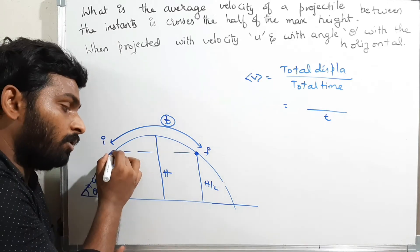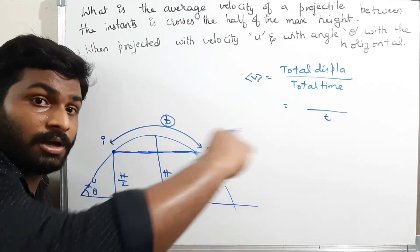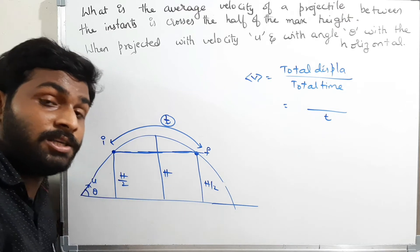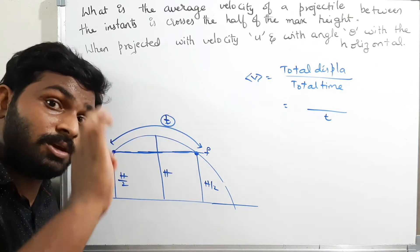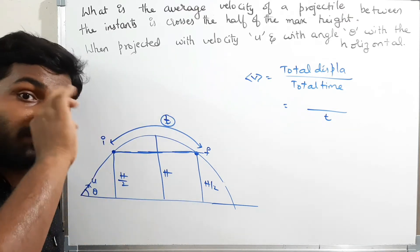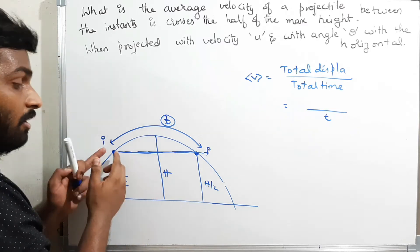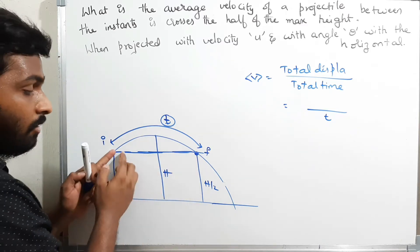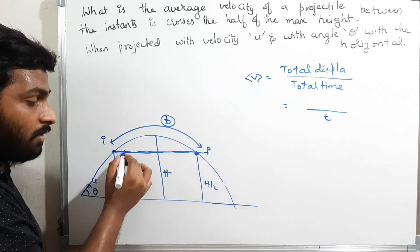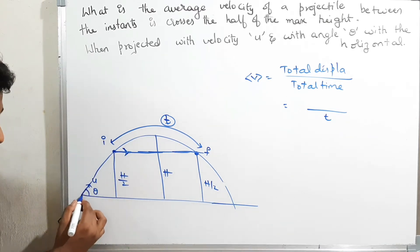The average velocity formula is total displacement divided by total time. The total time to move from here to here is T. Now, both the initial and final points are at the same horizontal level, which means the vertical displacement is zero. There is no vertical displacement — only horizontal displacement.